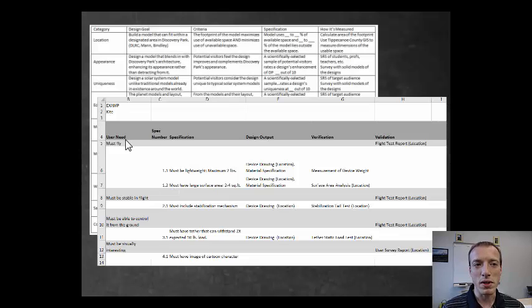So my example here was a kite. I said my user needs should be the kite should fly. That's one of the primary functions or attributes of the kite. And then for my specifications, I said, well, it needs to be lightweight in order to fly. It needs to be able to have a good size surface area. And I gave specific quantifiable numbers to each of those.